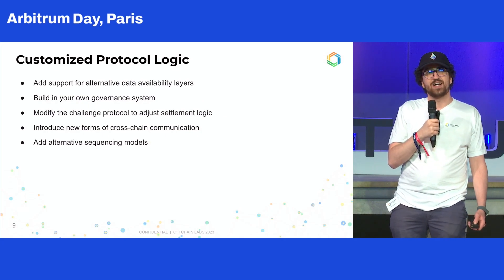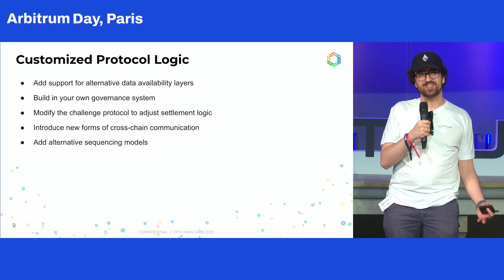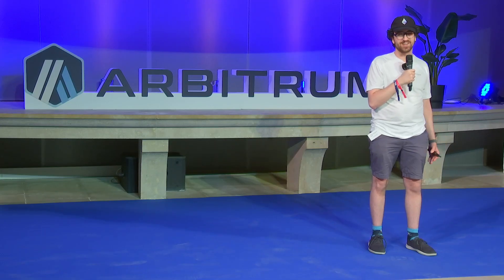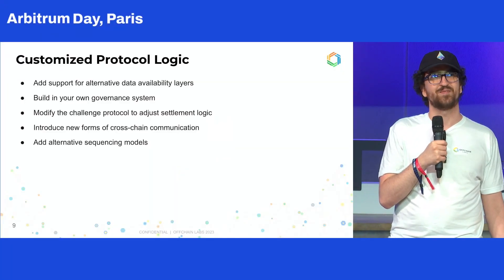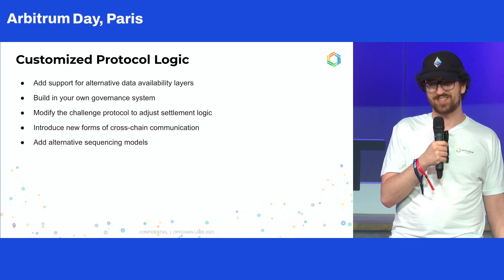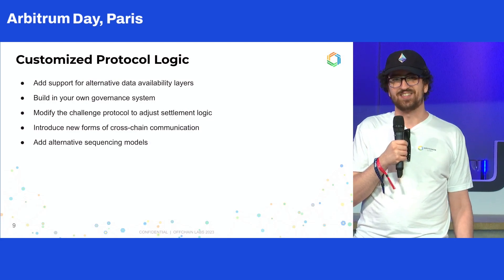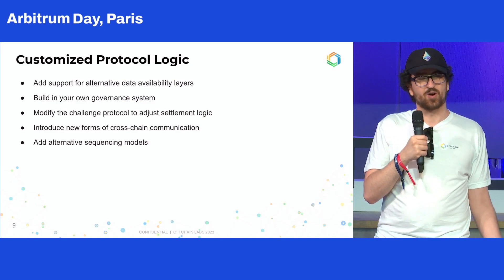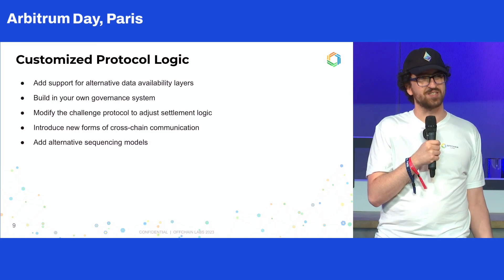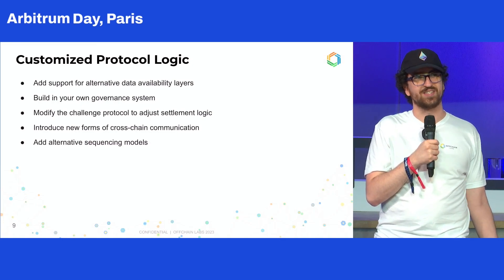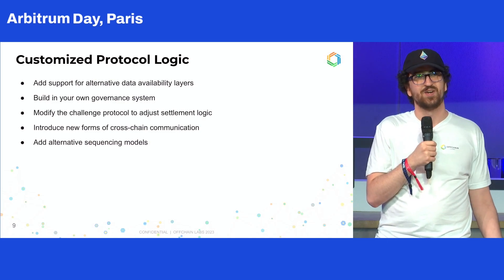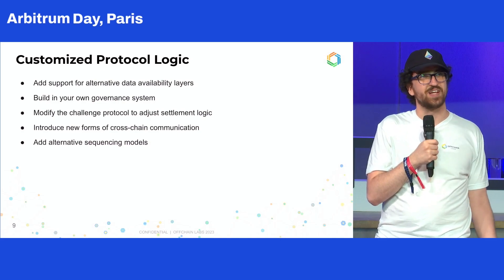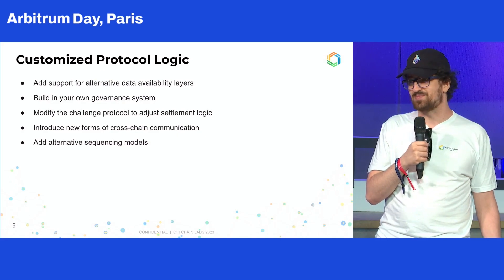And then finally, customized protocol logic. Beyond the state transition function, the other side you can modify is the actual core logic of the protocol. A few examples of immediate candidates: alternate data availability — Nova provides one model with Arbitrum AnyTrust, which is very powerful, but there are also a lot of other interesting models. For example, using Celestia for data availability is possible if you can customize the protocol logic.